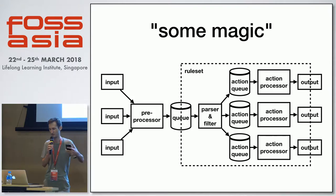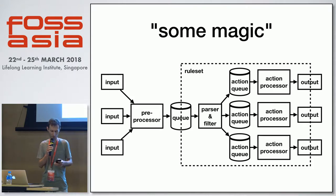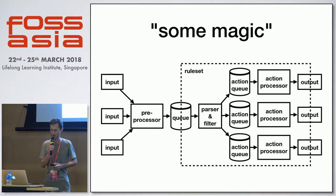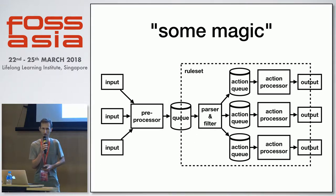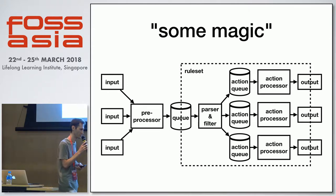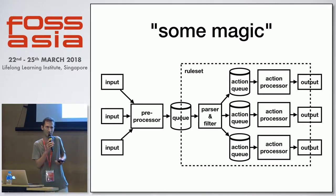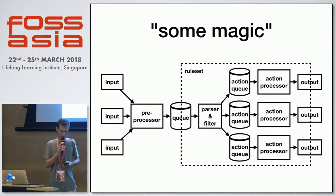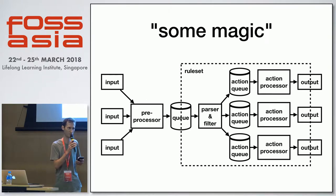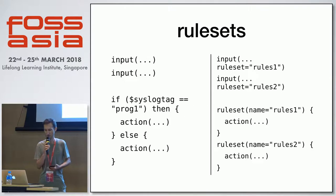The actual magic behind that is: we have inputs, queues, parsers, we can do transformations, and we can put it to output. There are also rule sets. Before around 2010 there was no rule set concept, but now you can share rules across multiple rule sets, not just one.